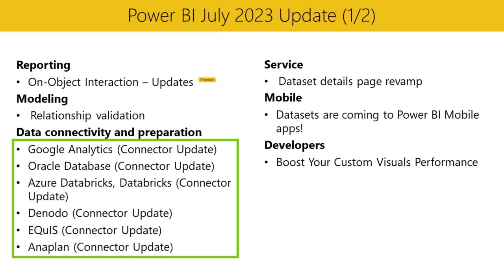Next up is data connectivity. The Google Analytics Connector has been updated to support the Google Analytics Data API — Google Analytics 4. To use this, use Implementation 2.0 when connecting. The Oracle Connector has been updated to enable Azure AD-based single sign-on through the on-premises data gateway, requiring the July release of that gateway. The Azure Databricks and Databricks Connectors have been updated with a new DSR Handler for Databricks multi-cloud and a fix for a UC not enabled and catalog spark not found error in the legacy code path.